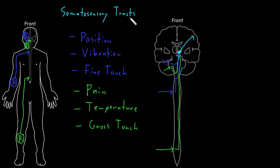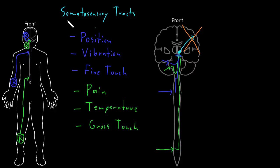Because the somatosensory tracts have this anatomy and structure, one major consequence is that an injury to one cerebral hemisphere often causes somatosensory loss on the other side of the body, because all of these pathways crossed from one side to the other. So, for example, an injury to the left cerebral hemisphere could produce loss or abnormal somatosensation on the right side of the face and body, depending on how much brain tissue is injured and how much of these pathways are affected.